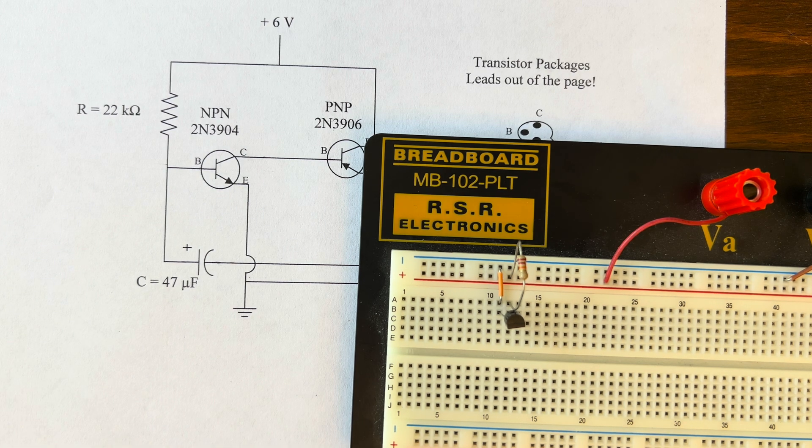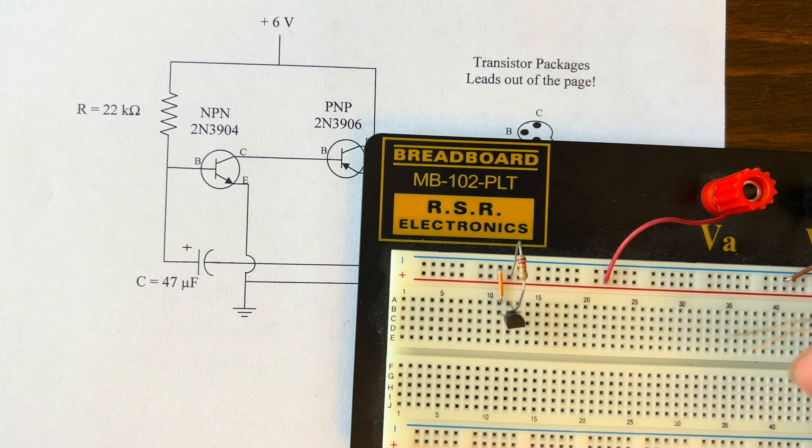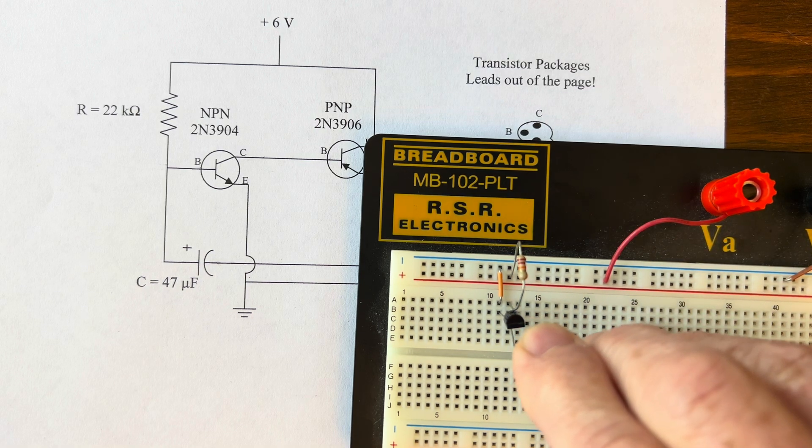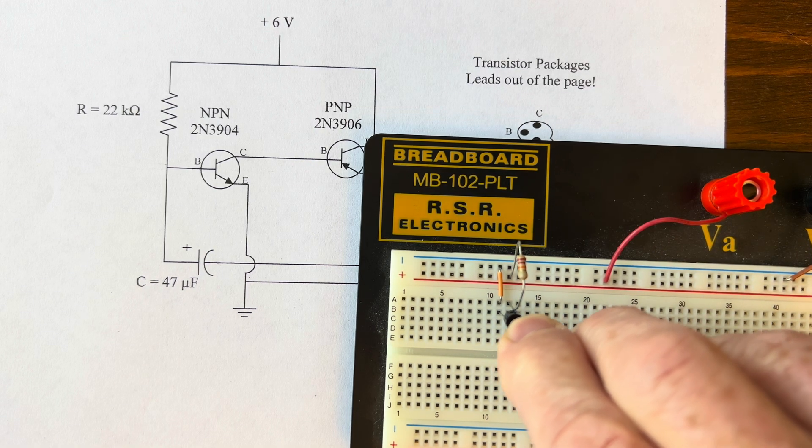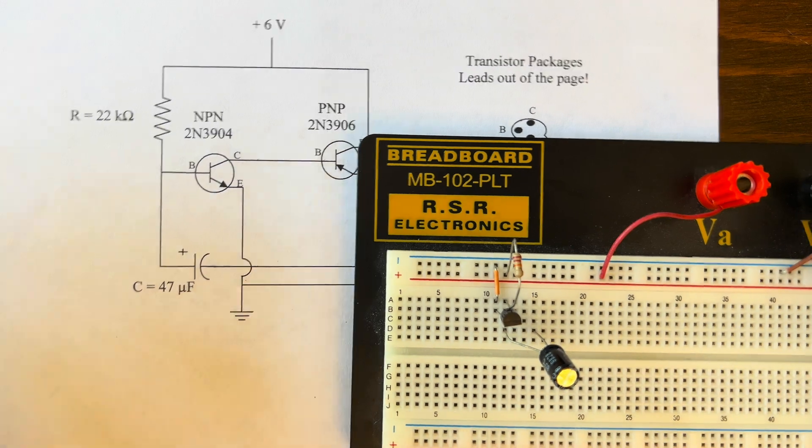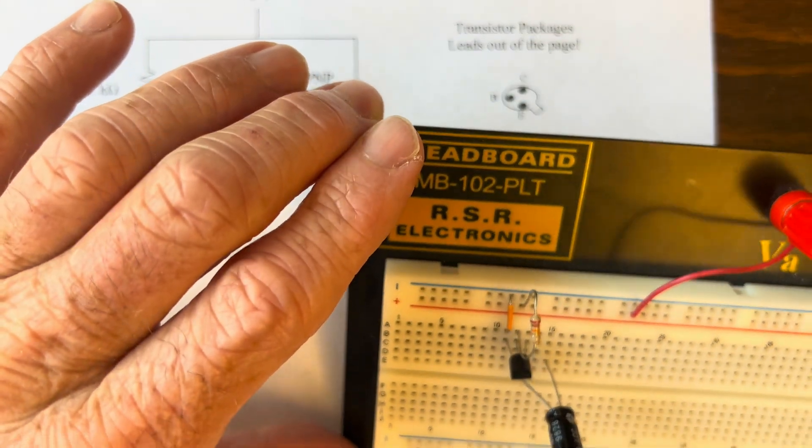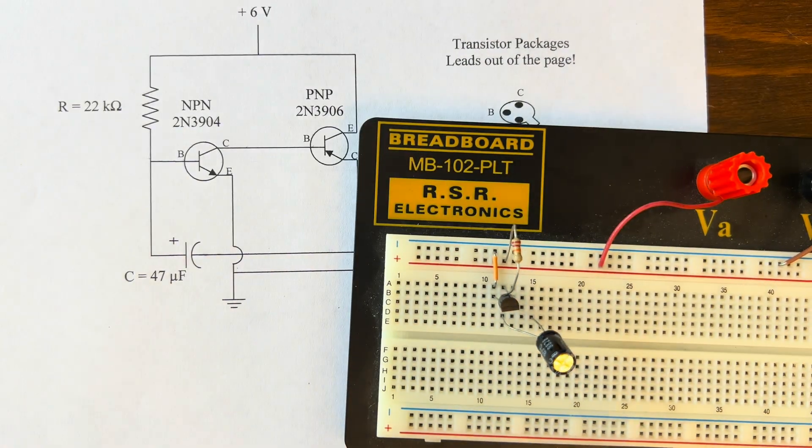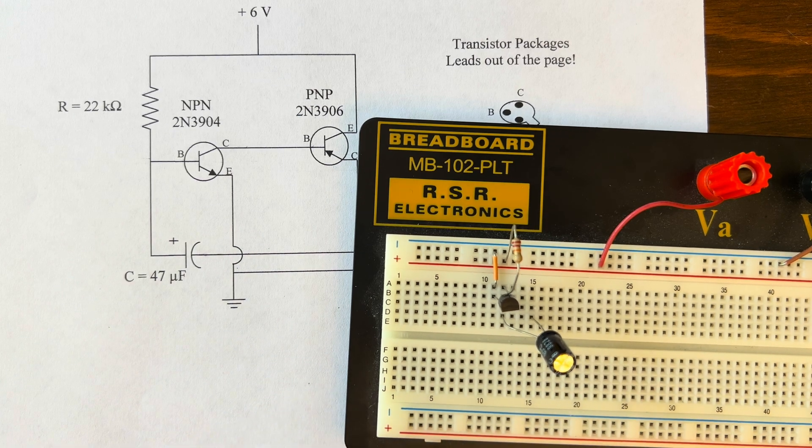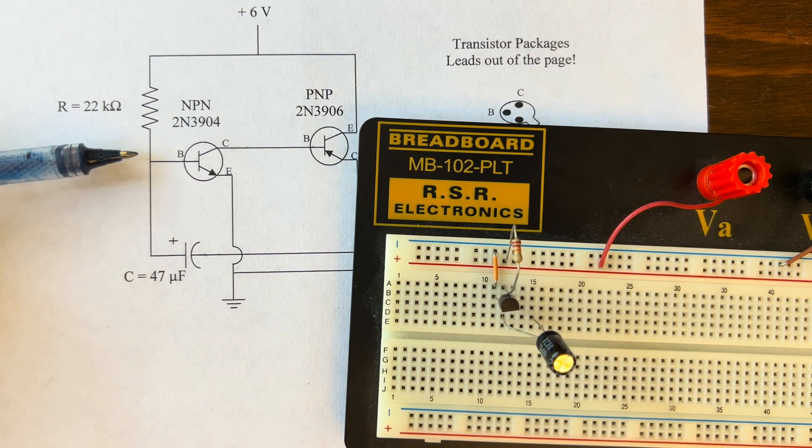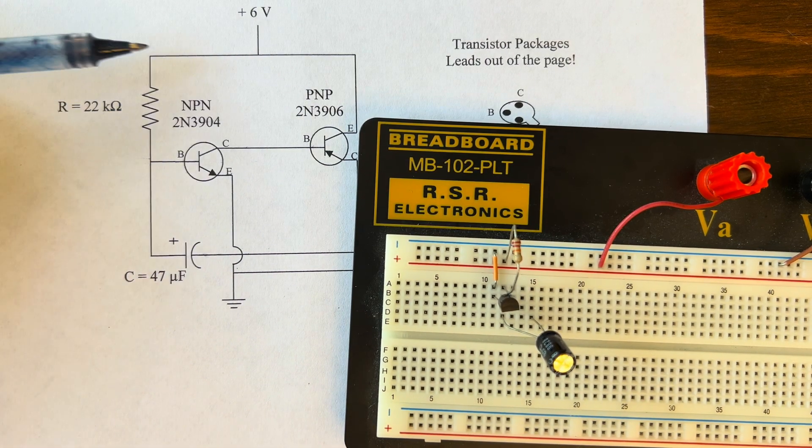But the base also goes to our capacitor. And notice it's going to go to the long leg of the capacitor. So I'll take the long leg of my capacitor and put it on the other side of the base over here. I'll take the negative side and I'll just put it somewhere else. Notice there's nothing else occupying that leg. So I've got the positive. I've got my base. I've got my 22 and so on.